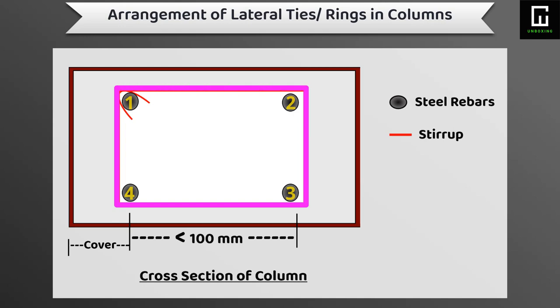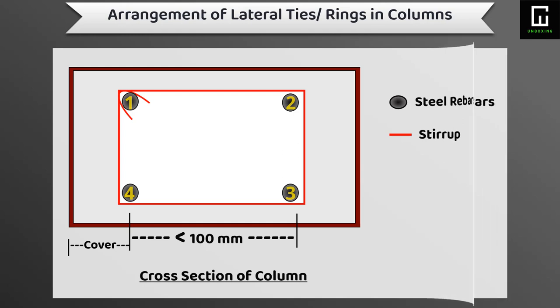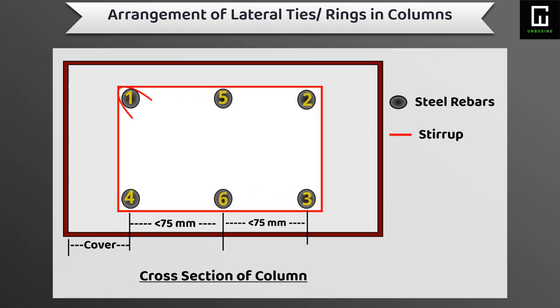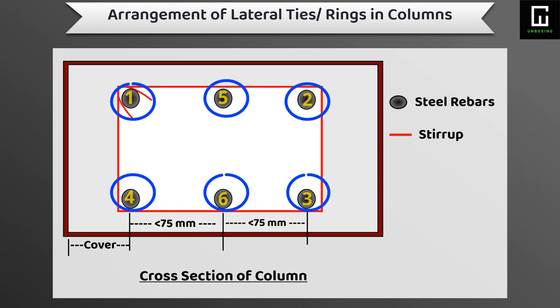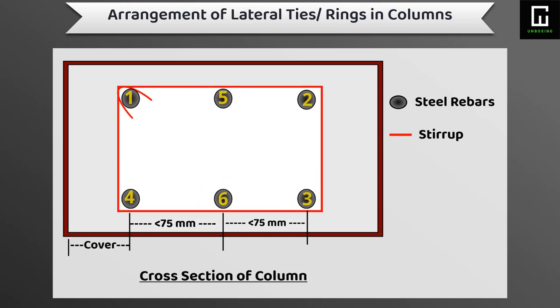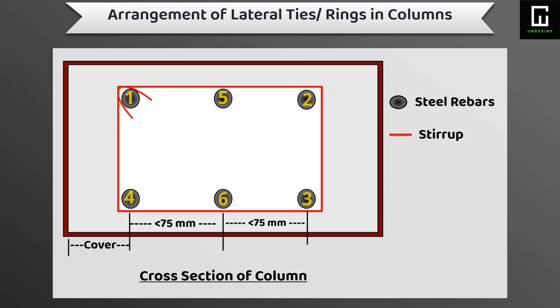In the second type of column, the column is less than 150 mm by 150 mm, having six numbers of longitudinal bars, out of which four numbers are at the corner side and the fifth and sixth bars are on the inner side of the column.